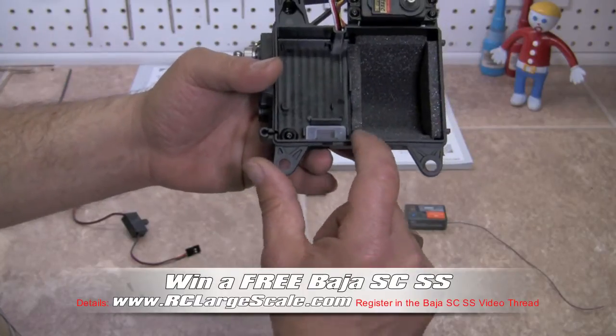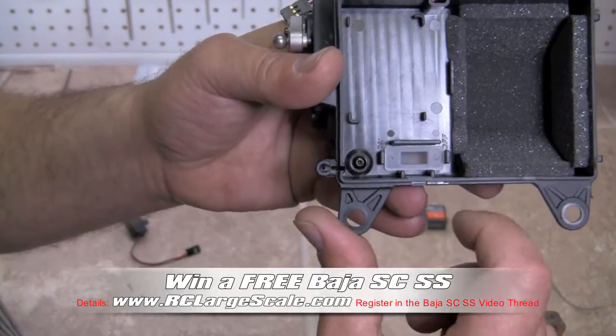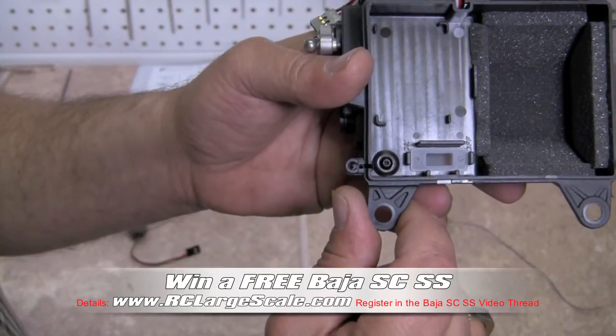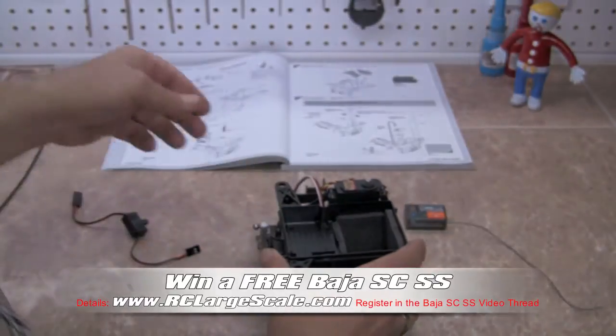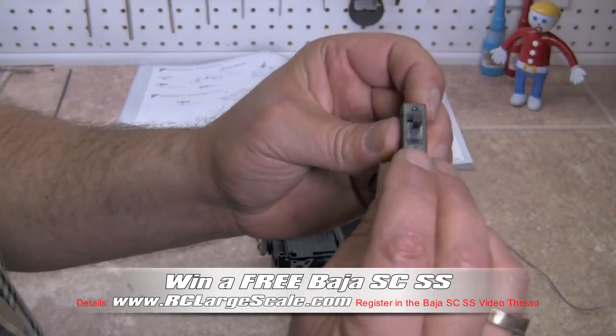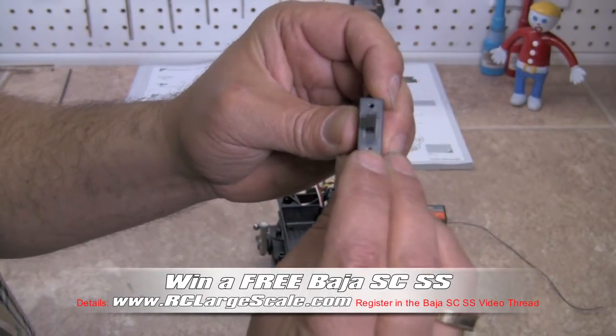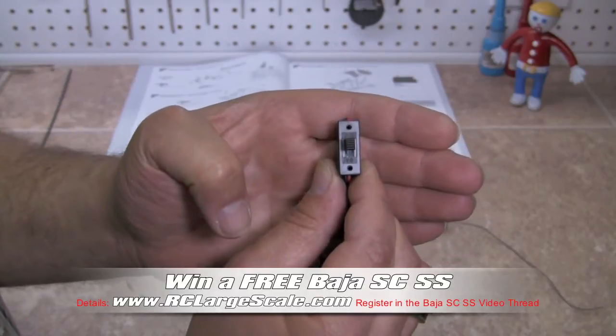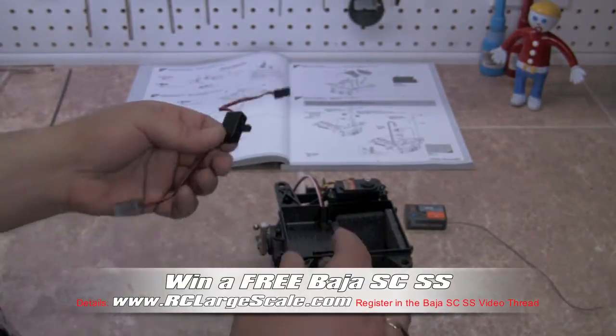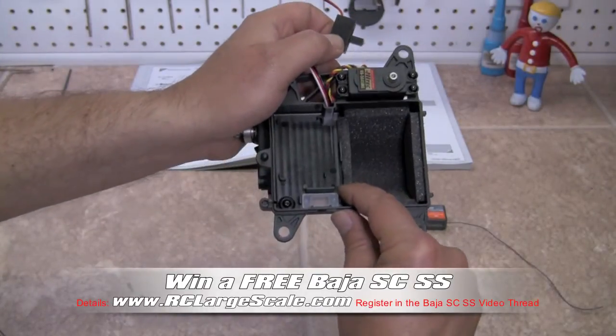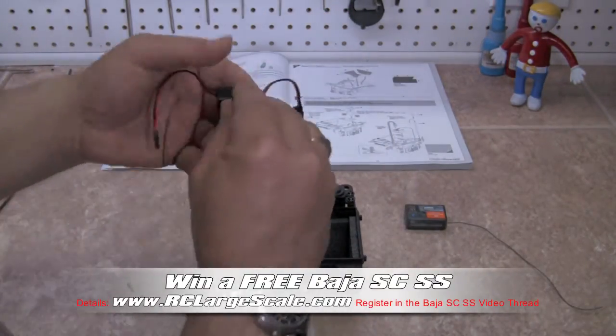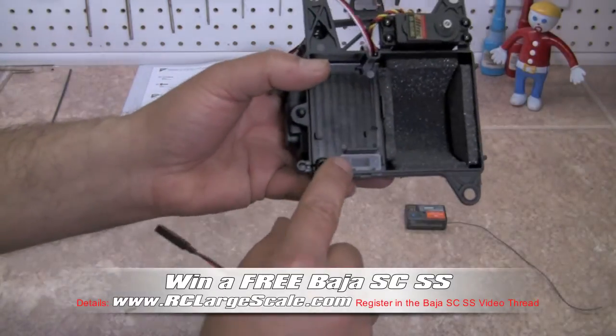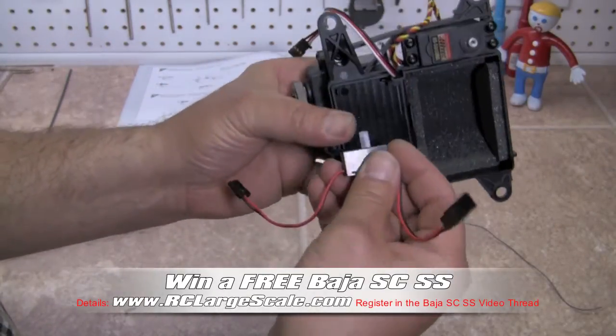On the inside of the case here you're going to see that it says off and on, and you're going to want to make sure that your switch corresponds with the off and on that's located on this. We're going to line up with the off that's on the inside of the case, make sure that we're going in the right direction, and we're going to slide the switch into the little switch area here.